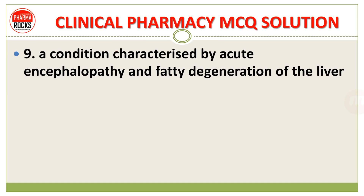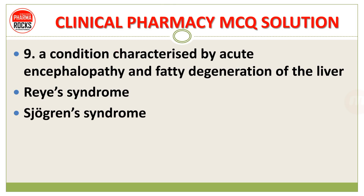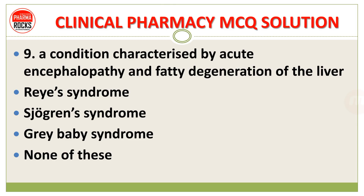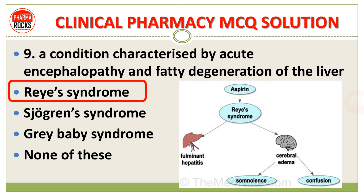Number 9: A condition characterized by acute encephalopathy and fatty degeneration of the liver — is it Reye's syndrome, Sjögren's syndrome, gray baby syndrome, or none of these? The right answer is Reye's syndrome. This is a famous side effect associated with the drug aspirin. It causes cerebral edema and fulminant hepatitis, affecting both the liver and the brain.